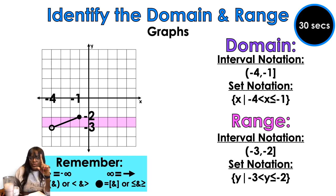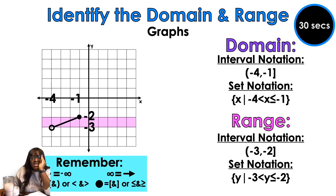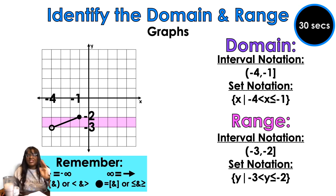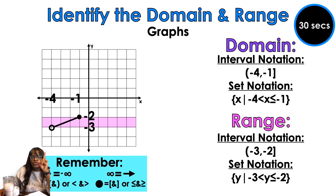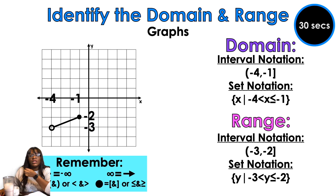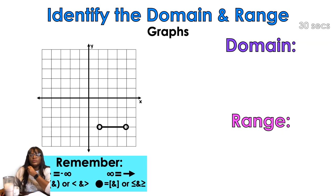When I write my range I'm going to do parentheses negative three comma negative two bracket. In set notation: negative three is less than — not equal to — y is less than or equal to negative two. So negative two gets an equal to and a bracket because the circle is closed, but negative three has a parenthesis and only a less than — no equal to.